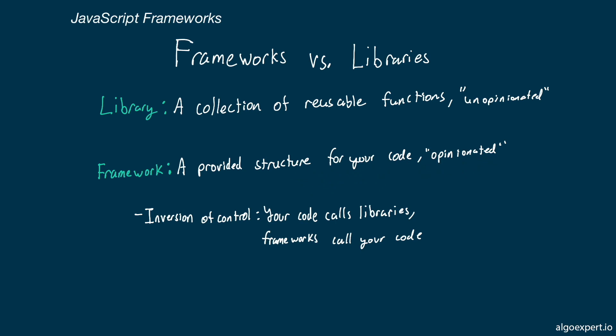A common way to think about this is based on a concept known as the inversion of control. For a library, our code is going to call the library code — when we need some utility function, we call the library to use their function. However, a framework is going to call our code. The framework provides a structure for how the webpage will work, and we fill in the gaps. We provide the implementation details of a single component, whereas the framework controls how that component is rendered on the page.